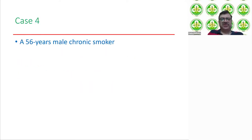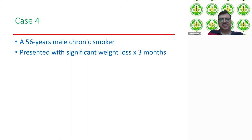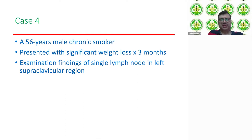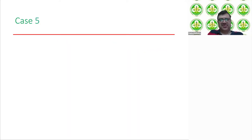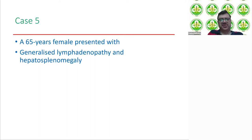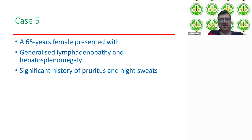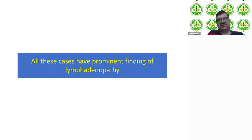Case four: a 56-year-old male who is a chronic smoker, presented with significant weight loss of three months' duration. On examination, there was a single lymph node in the left supraclavicular region. Case five: a 65-year-old female who presented with generalized lymphadenopathy and hepatosplenomegaly, with a significant history of pruritus and night sweats. All these cases have prominent findings of lymphadenopathy.